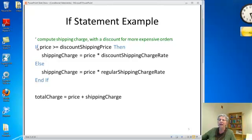We're going to say if the price is greater than or equal to whatever the discount shipping price is, let's say $25, then the shipping charge is the price times the discount shipping charge rate. Else, the shipping charge is the price times the regular shipping charge rate. Then you figure out your total charge, it's the price plus whatever the shipping charge came out to be.